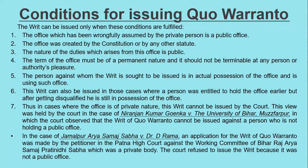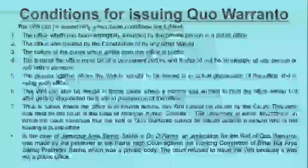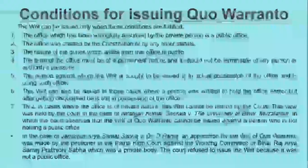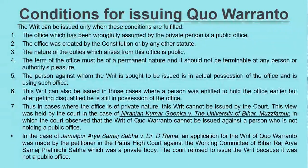There are certain conditions for issuing Quo Warranto. The office which has been wrongfully assumed by the private person must be a public office, and the office must have been created by the constitution or by other statute. The nature of the duties arising from this office must be public. The term of the office must be of a permanent nature and should not be terminable at any person or authority's pleasure. The person against whom the writ is sought to be issued must be in actual possession of the office and using such office. This writ can also be issued in cases where a person was entitled to hold the office earlier but, after getting disqualified, is still in possession of the office.